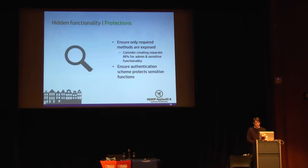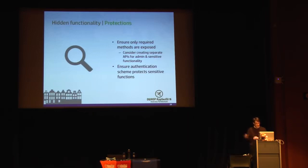For protection: ensure you're only exposing required methods. Don't assume that because you haven't documented some admin function, someone won't find it. If you have admin-type functions or sensitive operations that a common user wouldn't use, consider creating a completely separate API for those instead of bundling them with the core API. For any super sensitive methods, ensure you understand the authentication scheme and are properly protecting them.